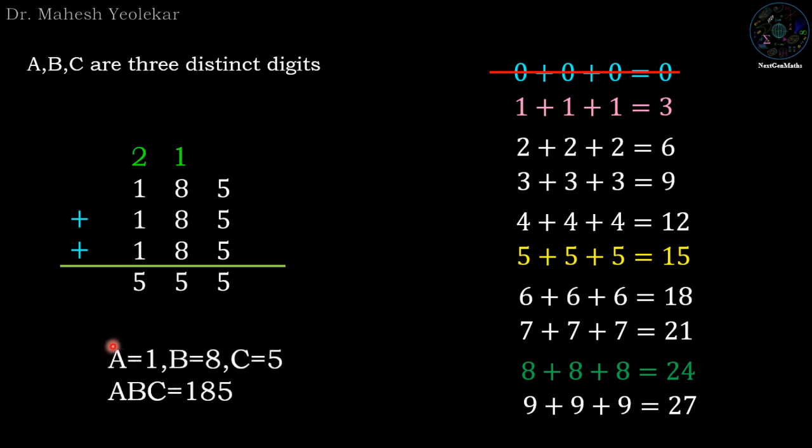So our answer is A equals 1, B equals 8, and C equals 5, that means ABC equals 185. This is one way to solve this. Now we are going to check another way.